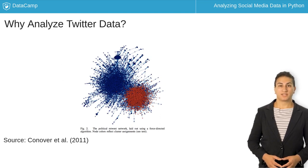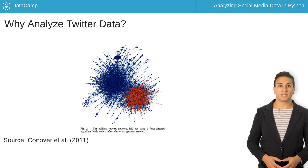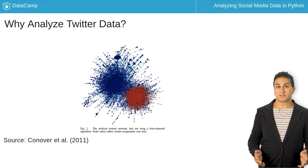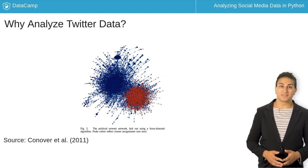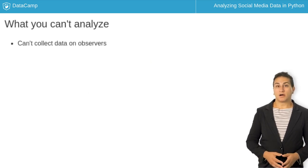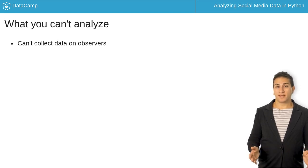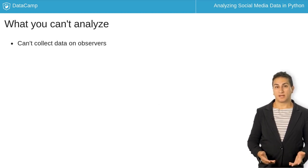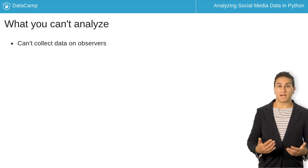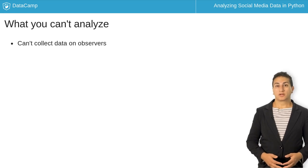Twitter data has been used to analyze political polarization, public opinion of world leaders, and the spread of protest movements. Of course, you can't access all of what happens on Twitter. It may seem obvious to say, but you can only collect information on what people say, not who is watching passively. Twitter collects data on this internally, but doesn't release it for analysis.